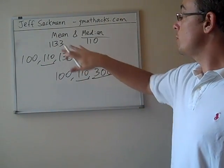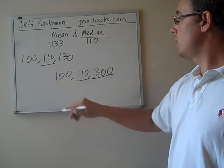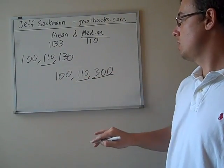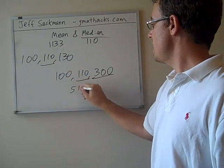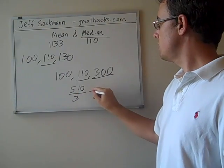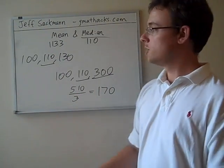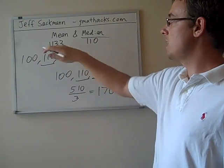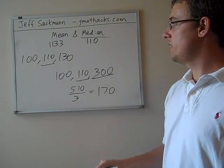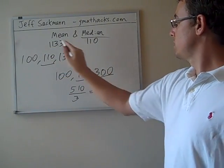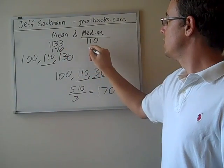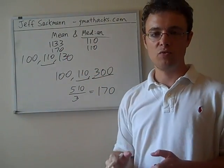But if we find a mean again with 100, 110, and 300, we're getting a sum of 510 divided by 3, we end up with an average of 170. So in the first place, with this set, we had a mean of 113 and a median of 110. In this set, we have a mean of 170 and a median of 110.